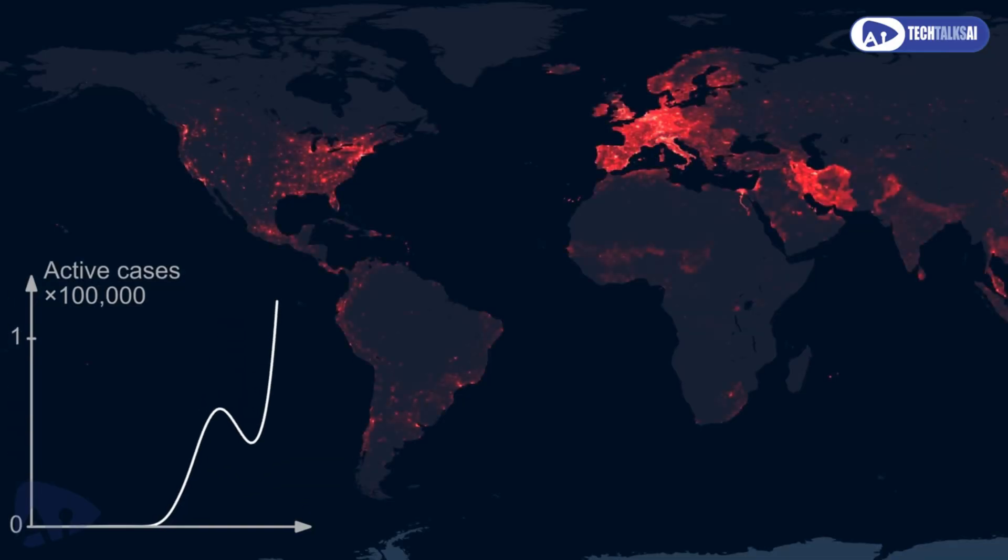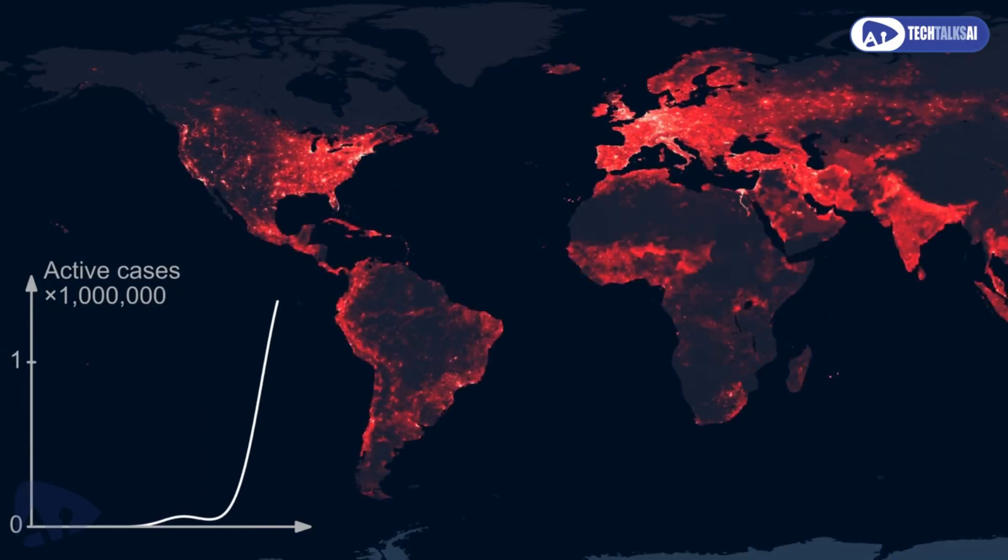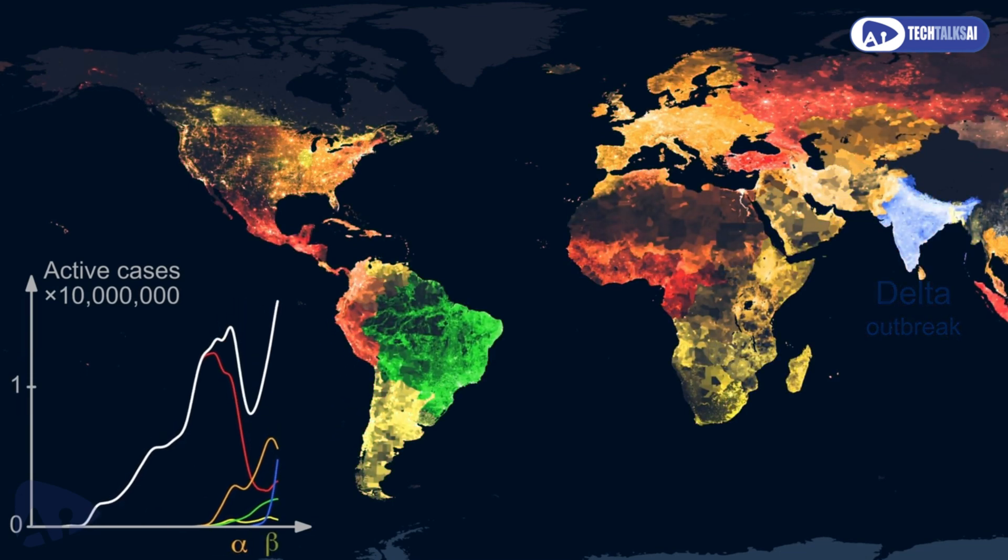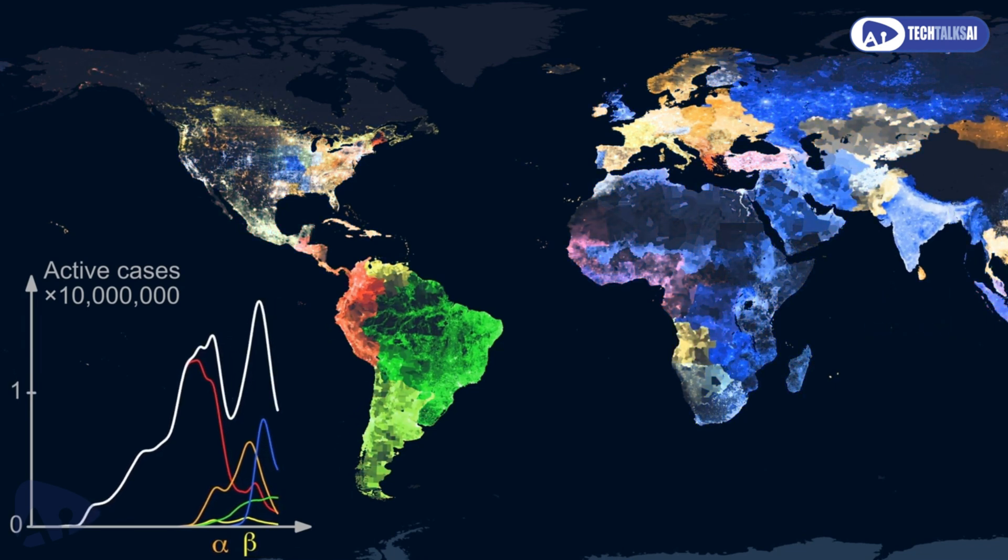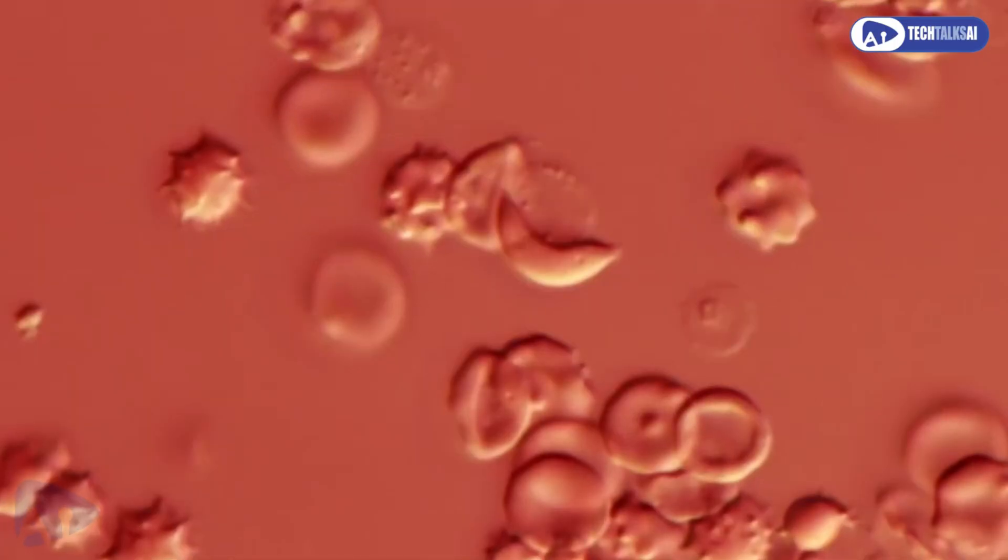Imagine a scenario where a virus is intentionally or accidentally released into the population. Unlike natural outbreaks, a synthetic virus could be engineered to be more virulent or resistant to treatment, potentially leading to widespread chaos.